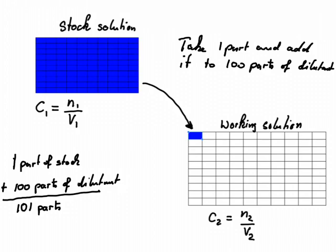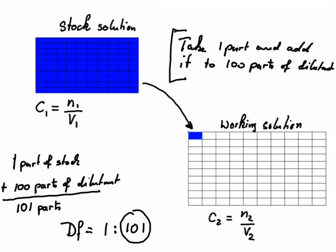In this case the dilution factor would be 1-to-101, because it means one part in a total volume of 101. We need to be really careful how the problem is phrased: if it is phrased as 'add to 100 parts' we add the two parts together to get the total volume, whereas in the previous example the final volume was fixed and we would need to take a different approach.